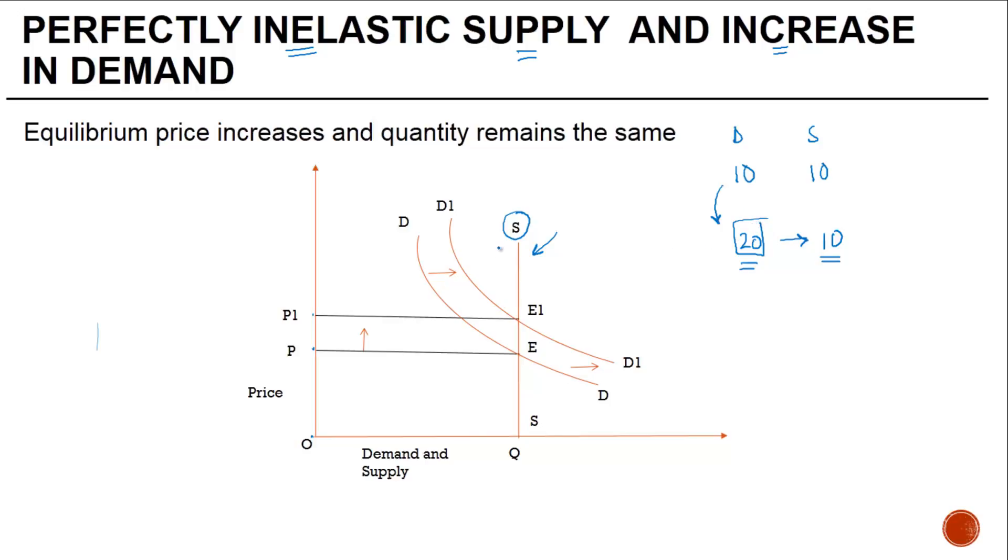That is what is depicted in this example. Under the original demand curve, the equilibrium price where the supply and demand intersected was P. But subsequently the demand increased from D to D1, the equilibrium price was E1 which is higher, resulting in a price P1 which is higher. The quantity however remains the same because the supply is perfectly inelastic.